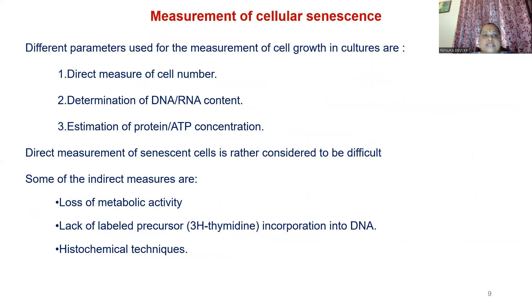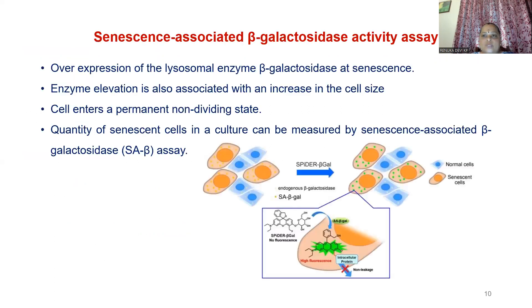We can measure cellular senescence by direct measurement of cell number, determination of RNA and DNA content, or estimation of DNA and protein concentration. Direct measurement of senescent cells is rather difficult. Some indirect measures include loss of metabolic activity, lack of labeled precursor, thymidine incorporation to DNA, and histochemical techniques. Using the beta-galactosidase activity assay, we can find elevation of the enzyme and increase in cell size. The endogenous beta-galactosidase in normal versus senescent cells helps identify intracellular protein molecule expression.